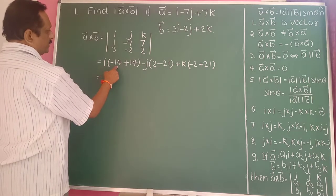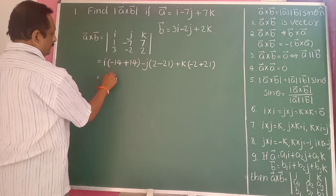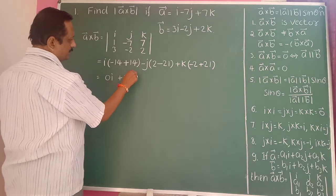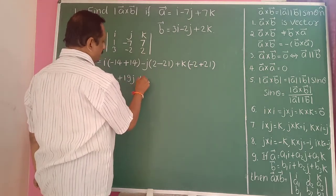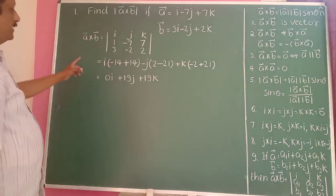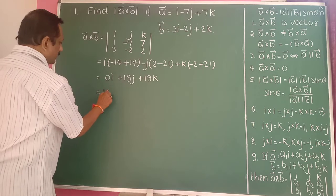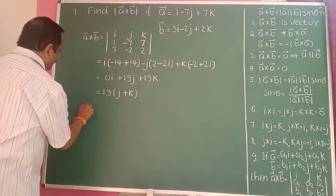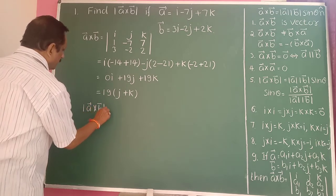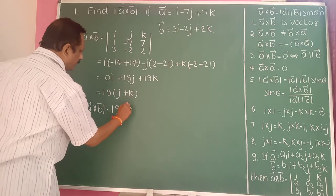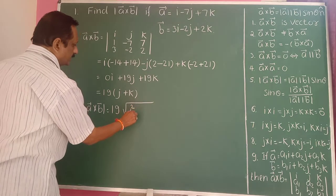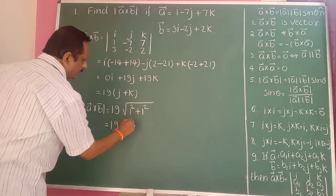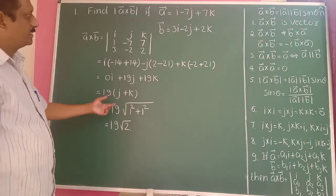So this gives 0i. Then 2 minus 21 is minus 19, and minus into minus gives plus 19j. And 21 minus 2 becomes 19, so plus 19k. Now find the modulus. Take 19 as a common factor, giving 19(j + k). Modulus of a bar cross b bar equals 19 into root of 1 squared plus 1 squared, which is 19 into root of 2. So the answer is 19 root 2.